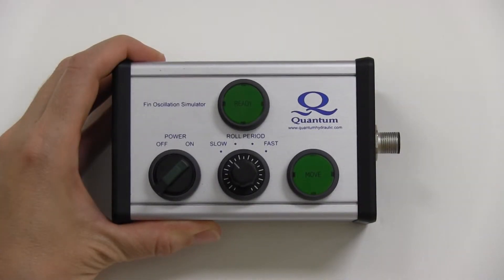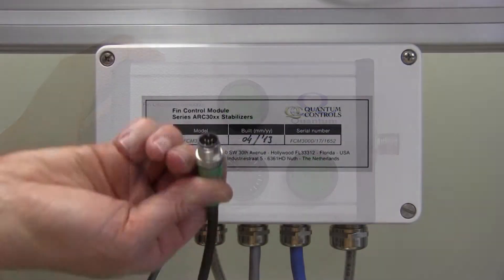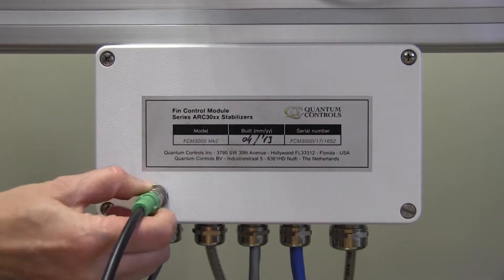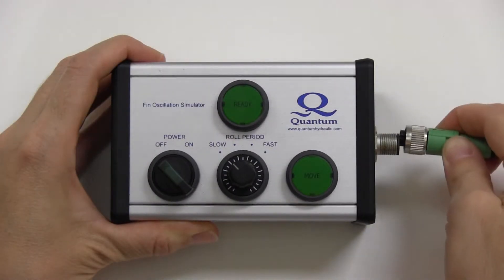Ensure that the power switch on the FIN Oscillation Simulator is in the OFF position. Connect the male end of the cable to the FIN or effector control module. Connect the female end to the handheld device.